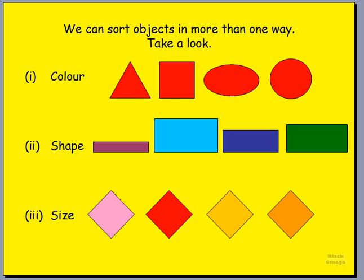And lastly, we have size. What shape do you see here in front of you? It's a diamond shape. Now they're all different colors, but the size is the same — the shape is the same as well. So at times we can separate these diamonds into one group because of the size; it all remains the same.